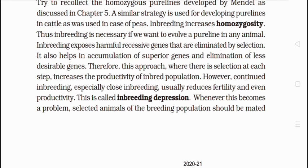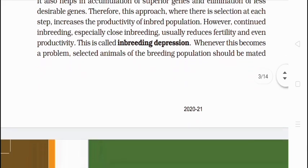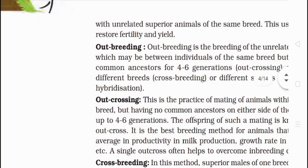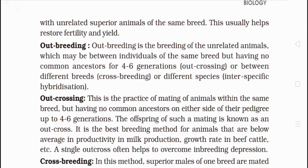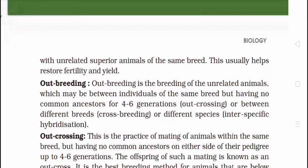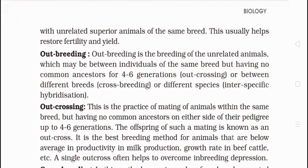With selection at each step, productivity of the inbred population will increase. However, continued inbreeding can cause inbreeding depression. Whenever this becomes a problem, selected animals of the inbred line should be mated with unrelated superior animals of the same breed. This usually helps restore fertility and yield.